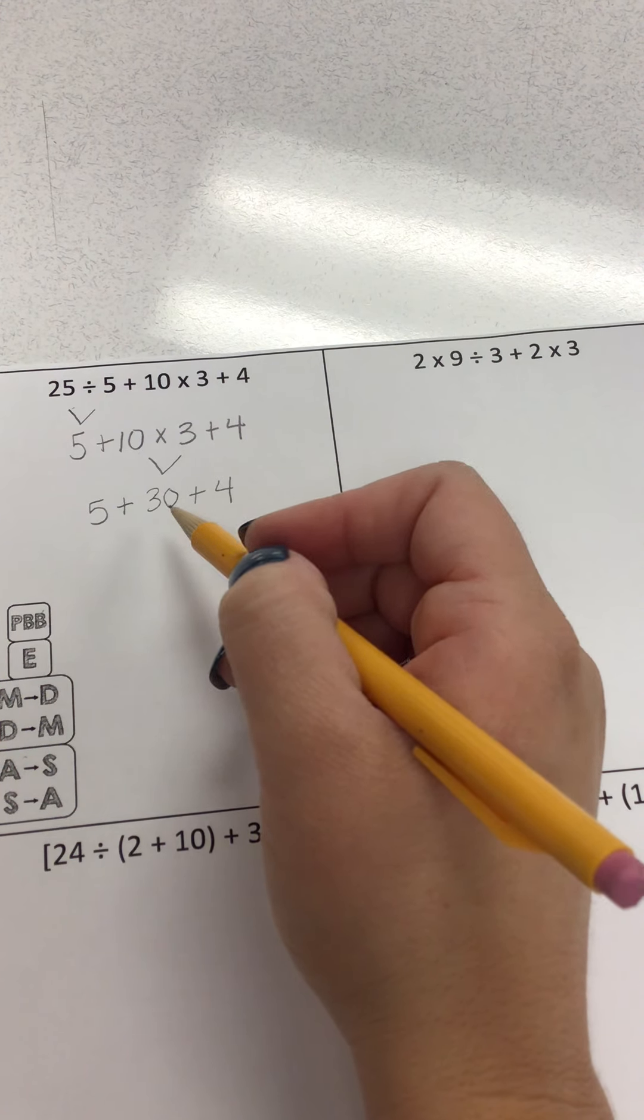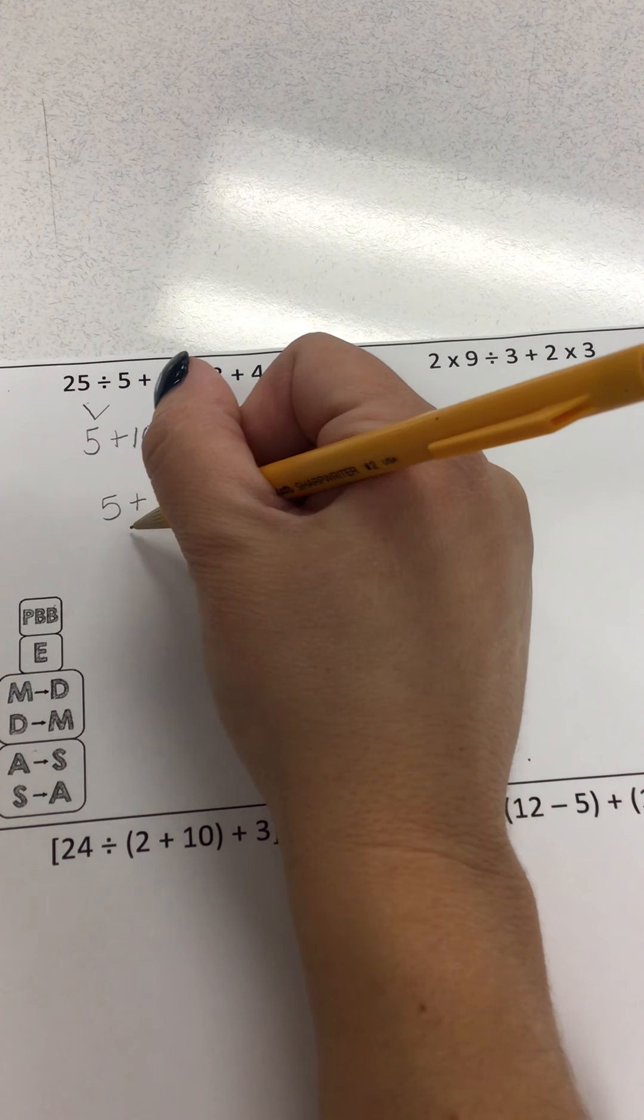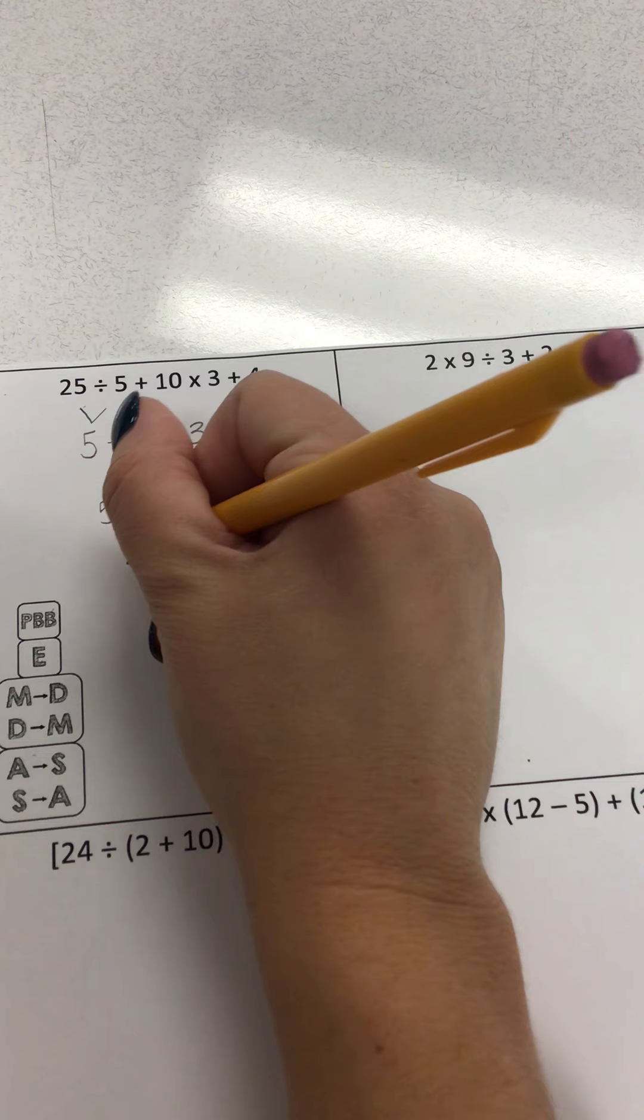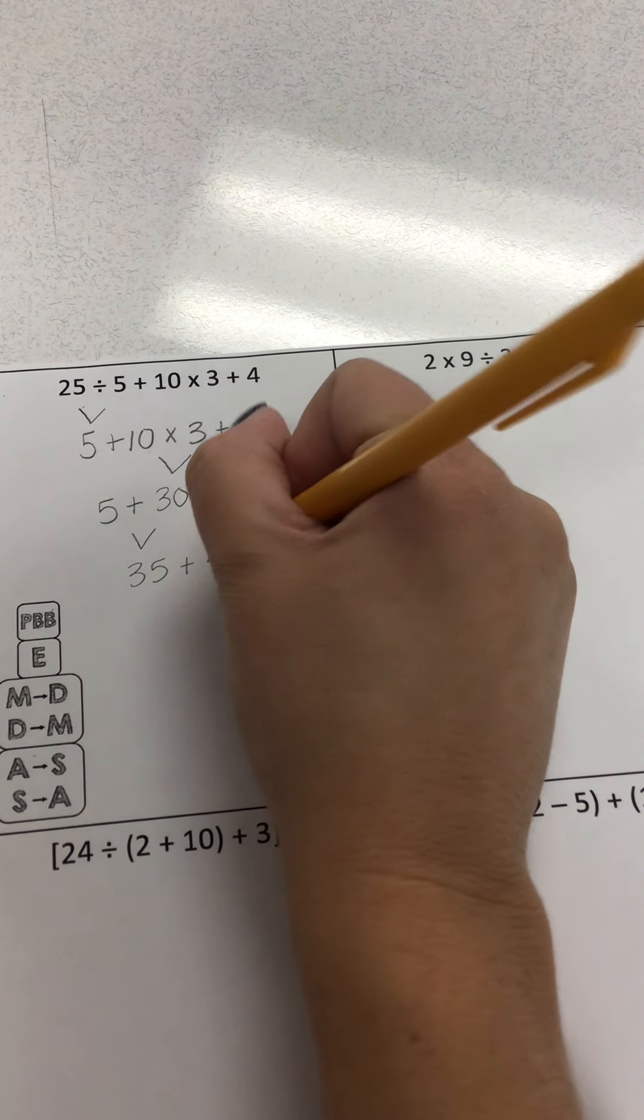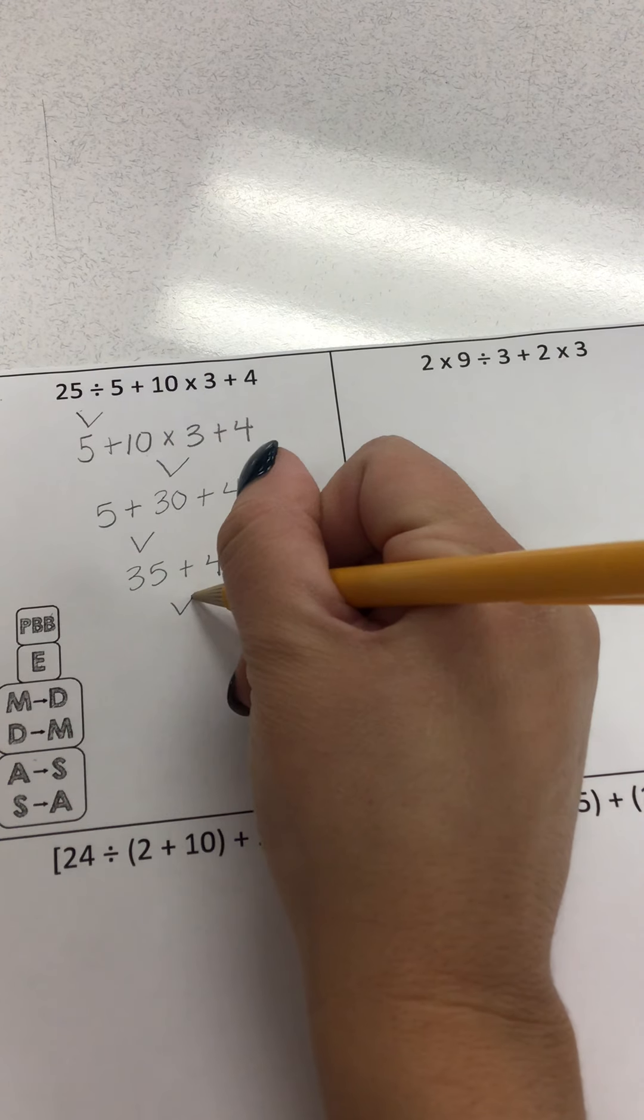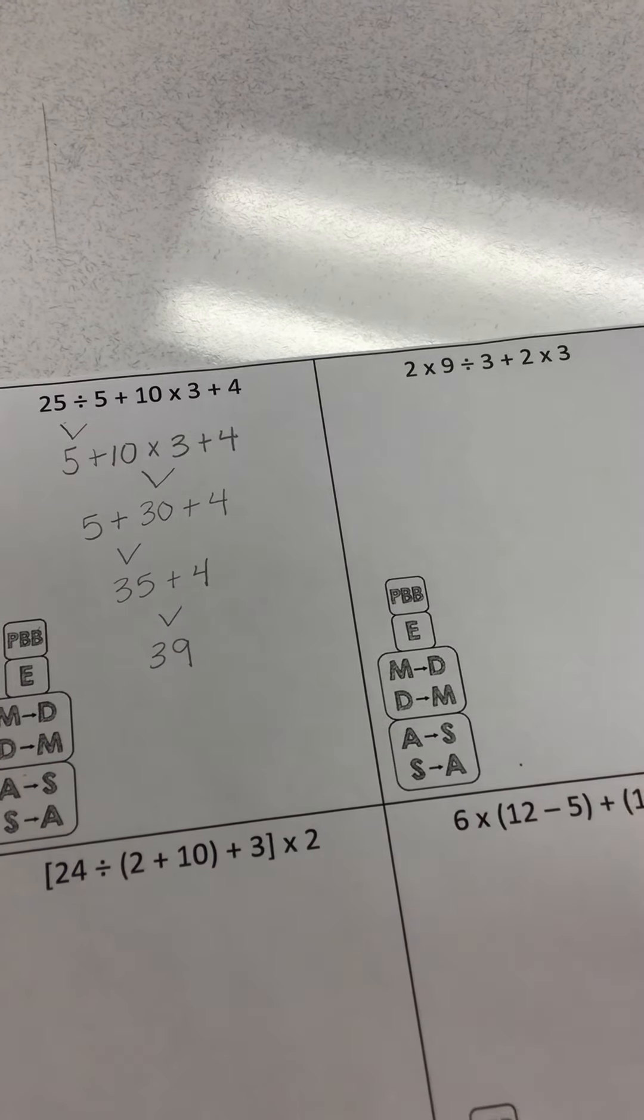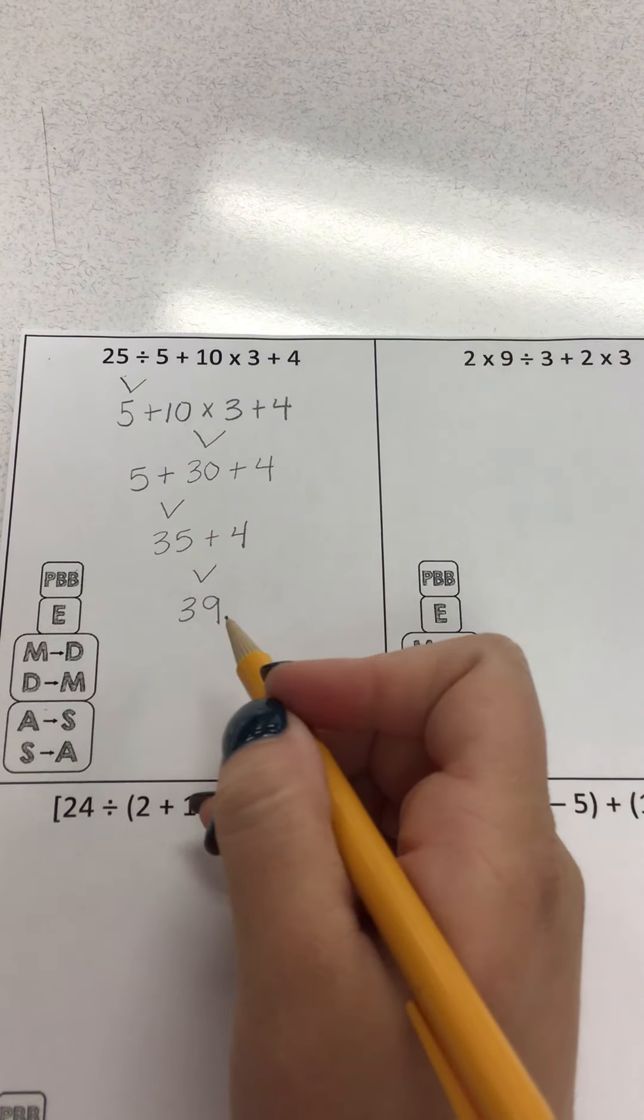Now I move from left to right. Again, 30 plus 5 is 35. Bring down the plus 4. 35 plus 4 is 39. So that is my answer.